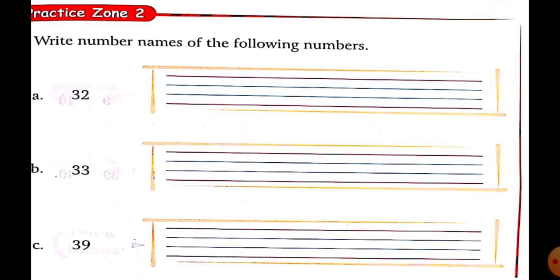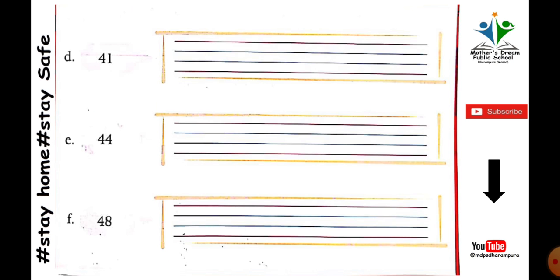You have been given numbers and you need to write their number names. Thirty-two: in 30 we add 2 — thirty-two. T-H-I-R-T-Y, thirty. T-W-O, two. Thirty-two. Thirty-three: T-H-I-R-T-Y, thirty-three. T-H-R-E-E, three. Next, thirty-nine. Forty-one: F-O-R-T-Y, forty. O-N-E, one. Forty-one.